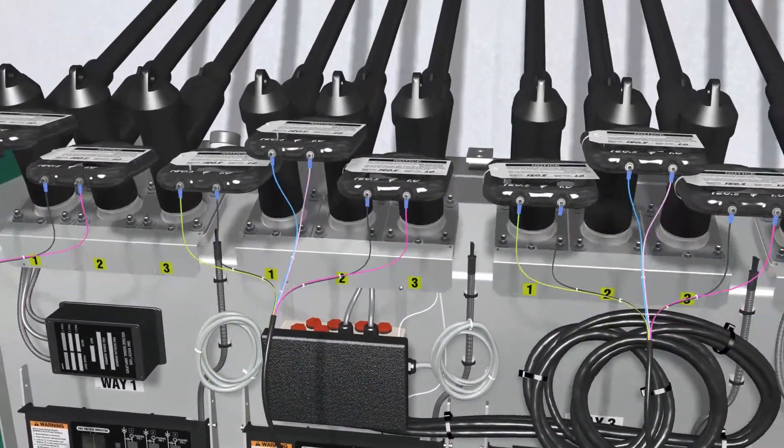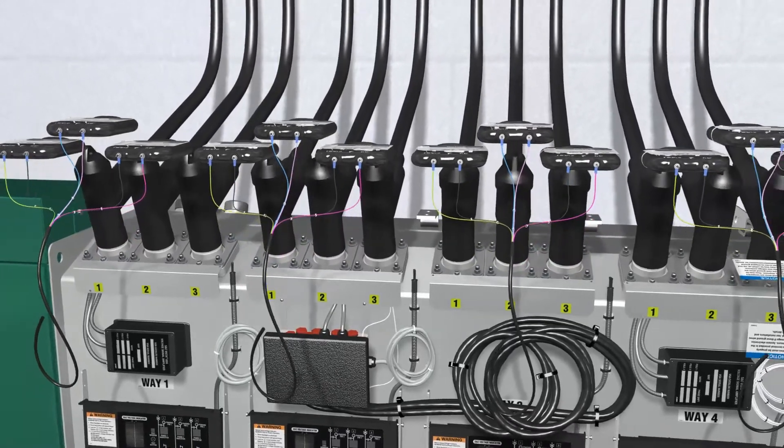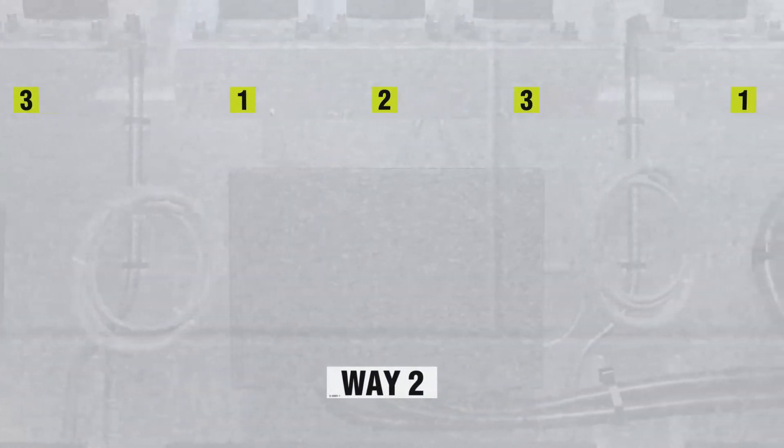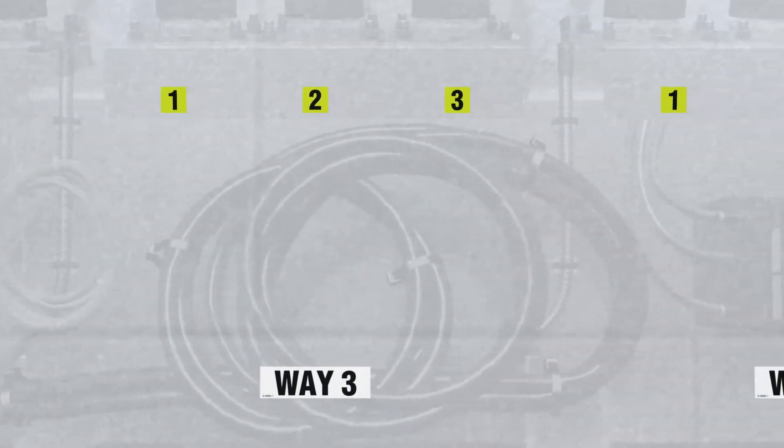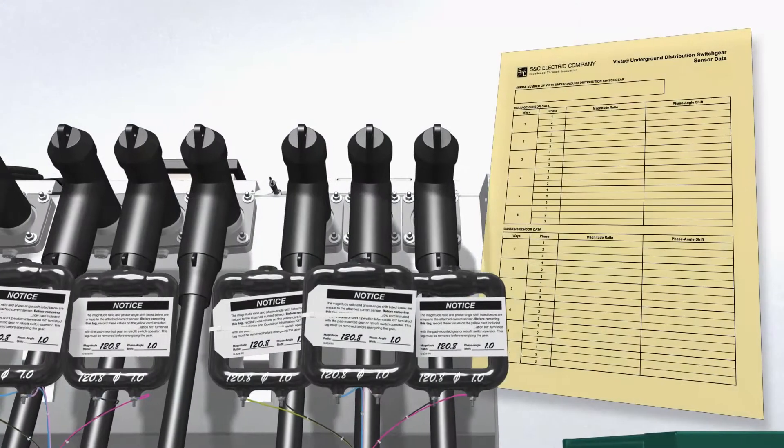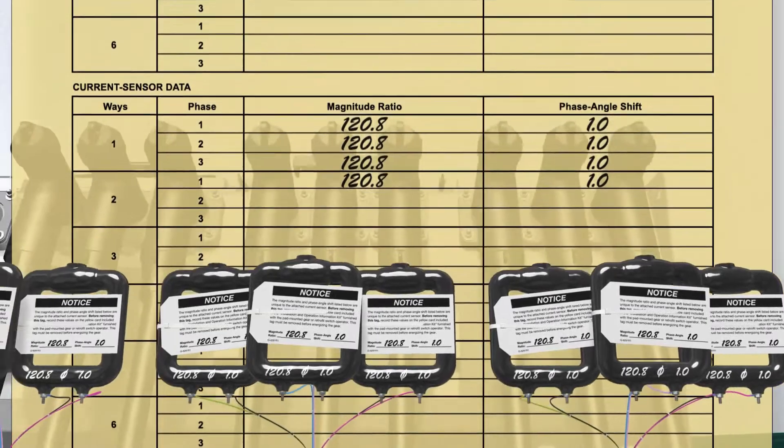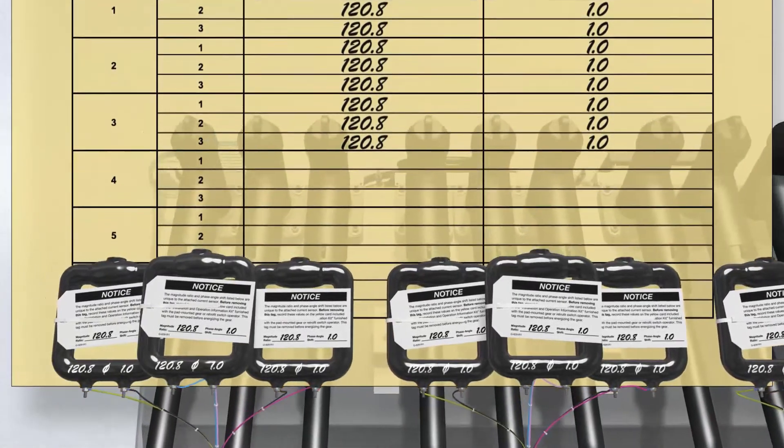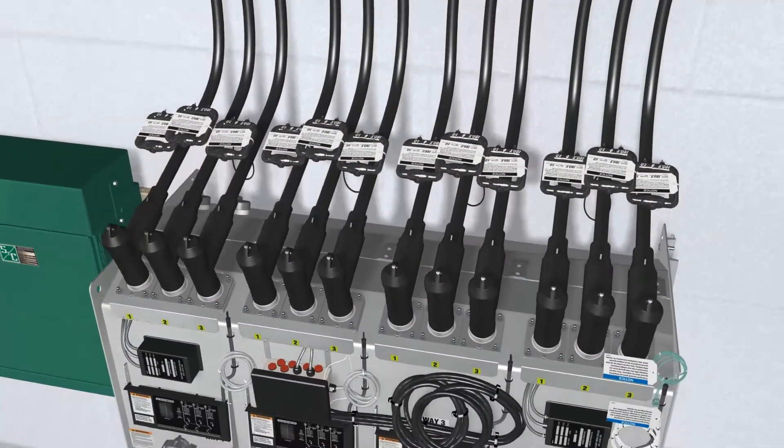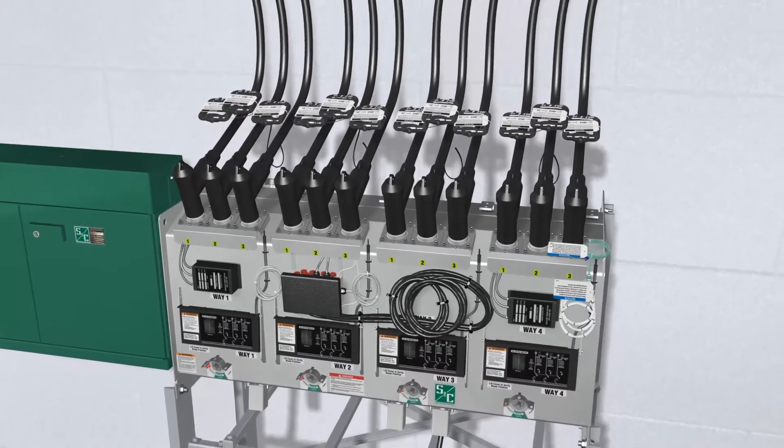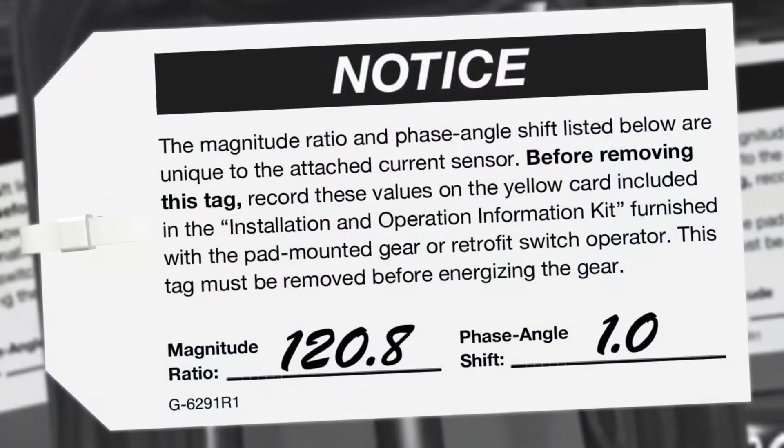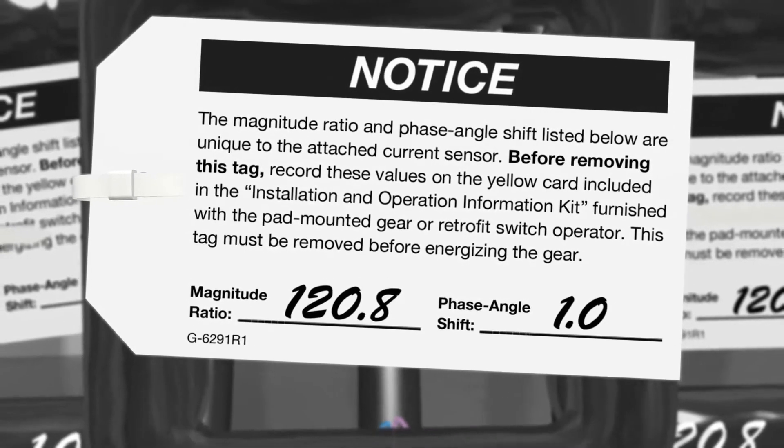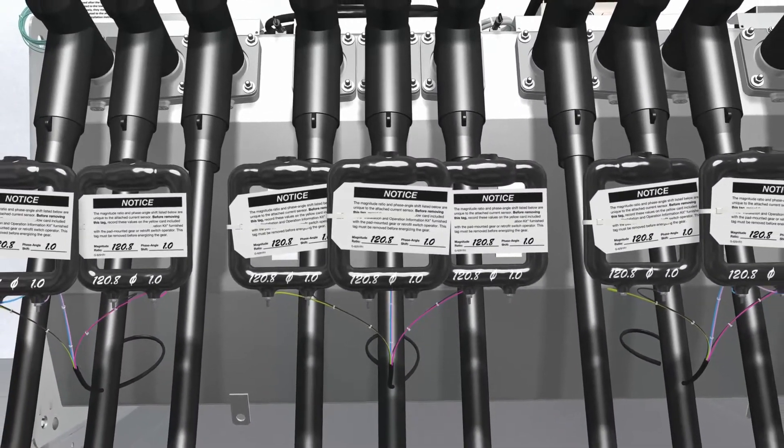Next, place each current sensor in front of the phase of the way on which it will be installed. Note, way and phase numbers are located above the bushing on the termination side. Record the magnitude ratio and phase angle shift of each current sensor in the appropriate location on the yellow card provided in the installation and operation information kit. These values are written on a tag attached to the sensor and on the sensor itself.